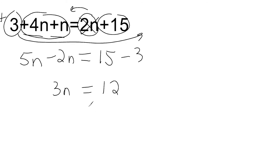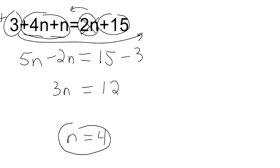That leaves us with 5n take away 2n, which is 3n. On the right-hand side, we have 15 take away 3, which is 12. Using a little mental math, n must be 4 because 3 times 4 is the only thing that would make 12. However, to show the work, we divide both sides by 3 — by the coefficient — and that gives us n equals 4. That is our answer.